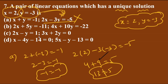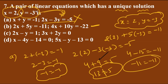Moving to option B: substitute x = 2, y = −3. First equation: 2(2) + 5(−3) = 4 − 15 = −11, and −11 = −11 ✓. Now check the second equation: 4(2) + 10(−3) = 8 − 30 = −22, and −22 = −22 ✓. Both equations are satisfied, so option B is the correct answer.